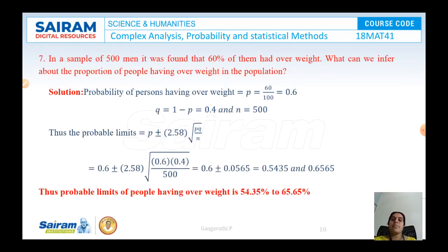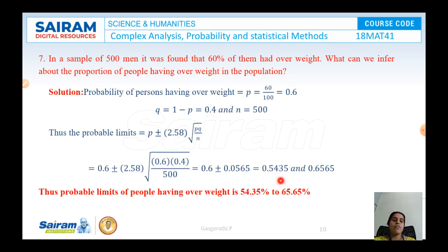In a sample of 500 men, 60% of them were found to have overweight. What can we infer about the proportion of people having overweight in the population? P = 0.6, Q = 1 − P = 0.4, and N = 500. The probable limits are P ± 2.58 × √(PQ/N), and substituting and simplifying gives 0.5435 to 0.6565. The probable limits of people having overweight range from 54.35% to 65.65%.